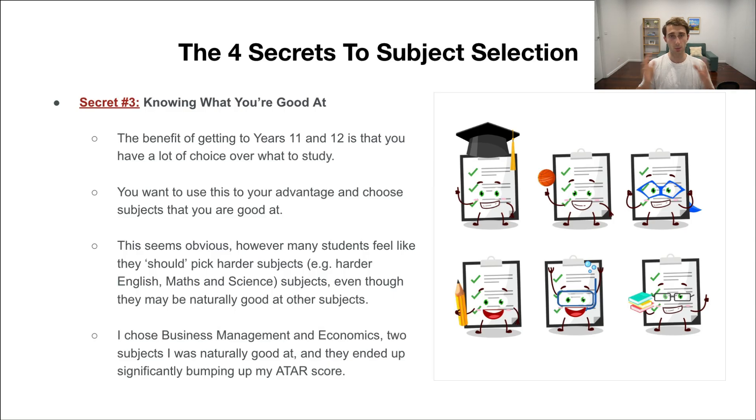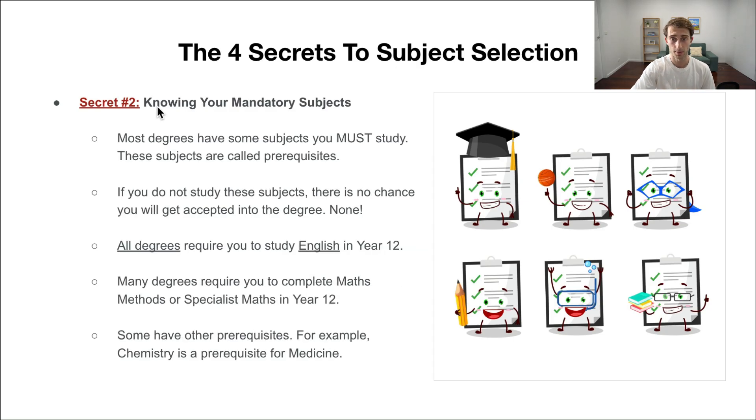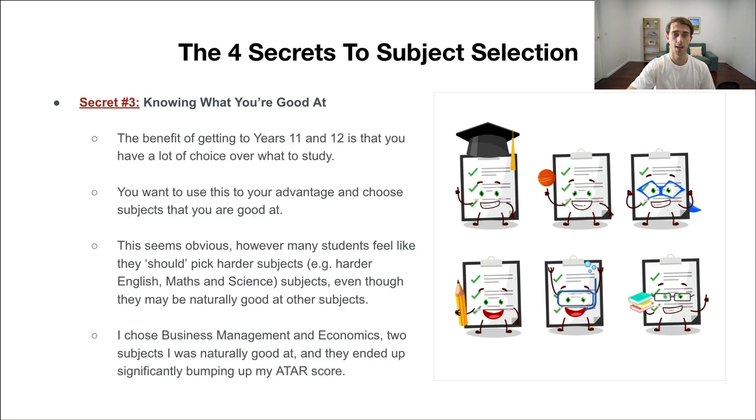First one is knowing what you're good at and picking subjects which you're naturally really good at. Often parents say, should we choose to do physics, biology, a really difficult maths because does that make me look better if I choose these harder subjects? The truth is that universities, doesn't matter what degree it is—medicine, law, arts, engineering—they just look at the final ATAR score. They don't look at what subjects you've done aside from the mandatory subjects, the prerequisites.